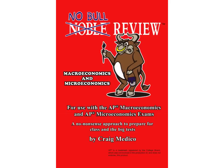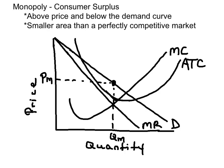Welcome to another Nobel review session for students in microeconomics. Today we're going to look at monopoly and consumer surplus. A consumer surplus exists when the price that a consumer is willing to pay is greater than the price that they have to pay. It's the area above the price and below the demand curve.